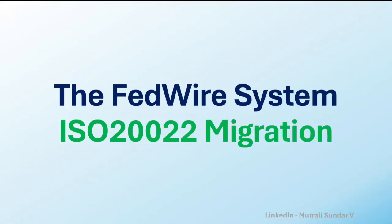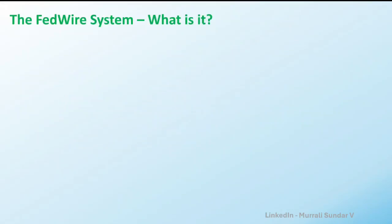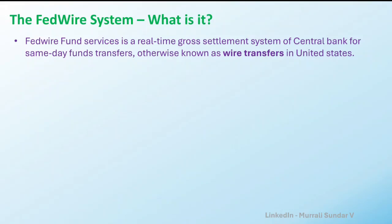First of all, what is the Fedwire system? The Fedwire Fund Services is a real-time gross settlement system operated in the USA. In the US they also call it wire transfers, because this is a domestic payment system that transfers funds individually from one bank to another bank. You can use the Fedwire system only if you are transferring money within the US region.